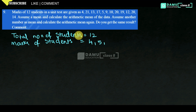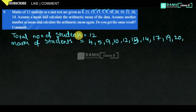The marks in ascending order are: 4, 5, 9, 10, 12, 12, 13, 14, 17, 19, 20, 21. These are the 12 numbers written in ascending order.